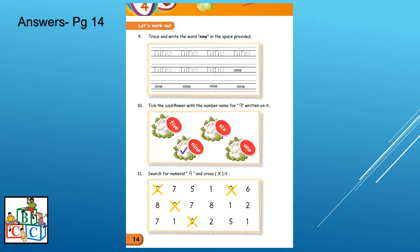So this is the answers. As you can see, for the number 10, I have ticked the cauliflower with the number name for 9 written on it. And for the number 11, I have crossed the numeral 9. So we have 4 numerals 9. Okay?